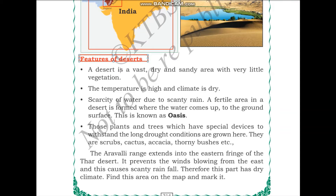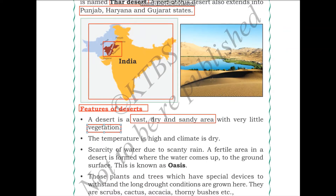A desert is a vast, dry and sandy area with very little vegetation. Vegetation means plant life — trees, plants, shrubs — all these constitute vegetation. In a desert we won't be able to see a lot of vegetation. In the image, this part is entirely covered with sand and water bodies are very rare to find in a desert.